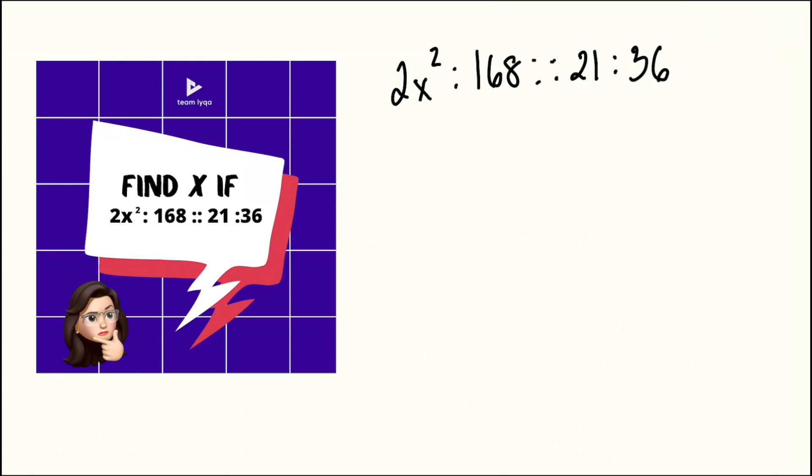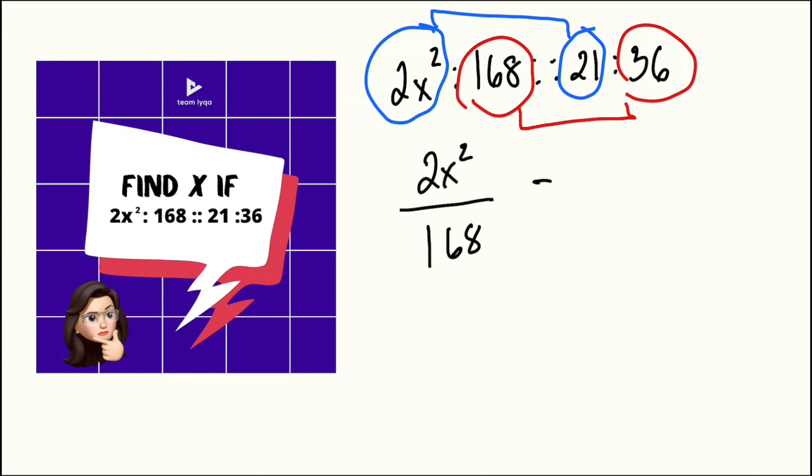Now, this is the problem. All we have to do first is to match what's corresponding in our fraction. For proportional problems like this, the first step is to make it a fraction. Our rule is whatever corresponds should correspond in the fraction form. So you have the first here with the first on the other side, and the last here with the last on the other side. So this gives us 2x squared over 168 equal to 21 over 36. And now that we have that, we can start solving the proportion problem.